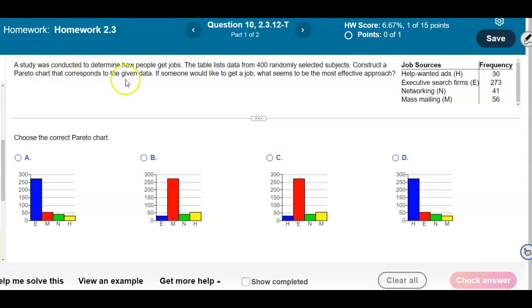A study was conducted to determine how people get jobs. The table lists data from 400 randomly selected subjects. Construct a Pareto chart that corresponds to the given data. If someone would like to get a job, what seems to be the most effective approach?